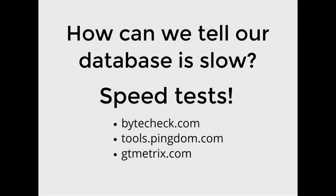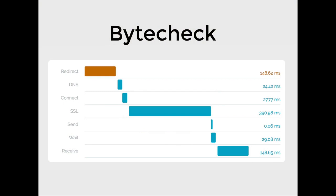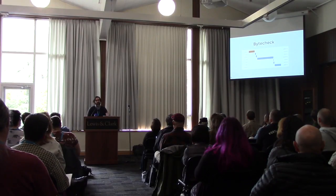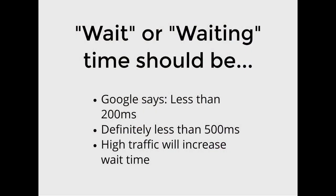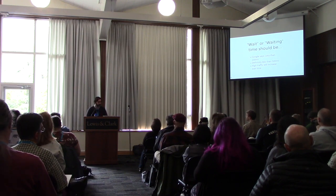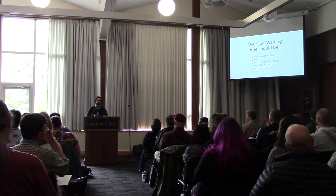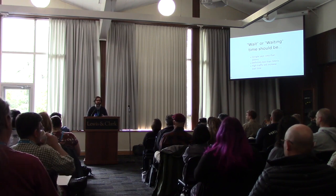How can you tell if the database is slow? Speed tests. Good tools include bytecheck.com, tools.pingdom, and gtmetrix. What we're looking for is time to first byte — and specifically a sub-metric called wait, which is the actual server time when WordPress and MySQL are doing their dance. This test result shows 29 milliseconds — that's great. Wait time should be under 200 milliseconds according to Google; anything under 500 is acceptable. The more traffic you have, the higher that time will be, so optimize for ideal conditions.